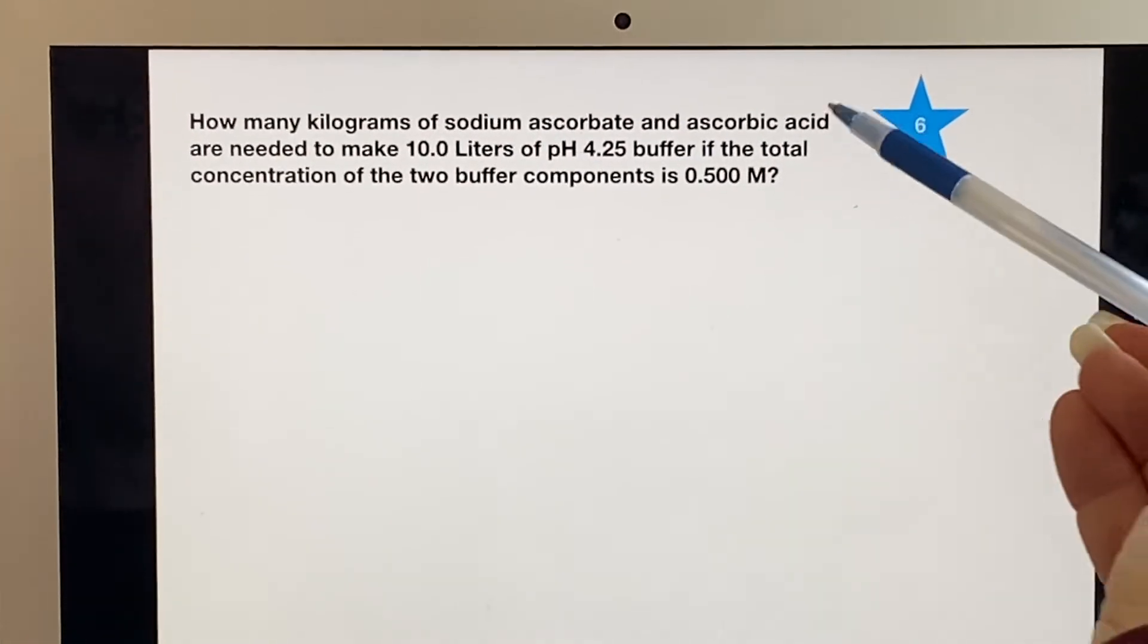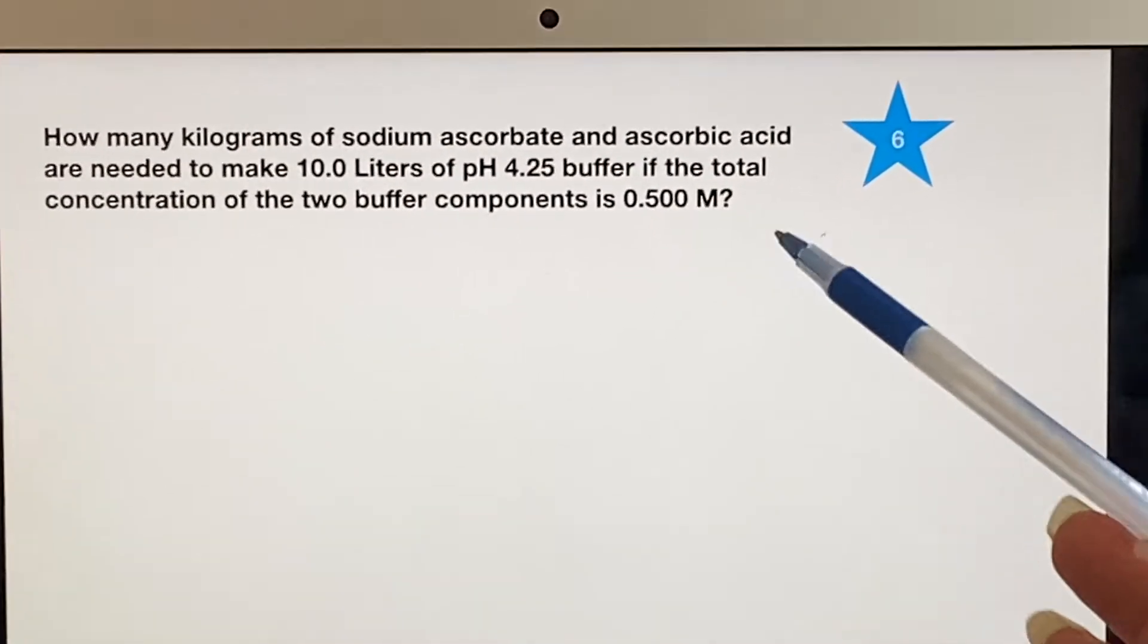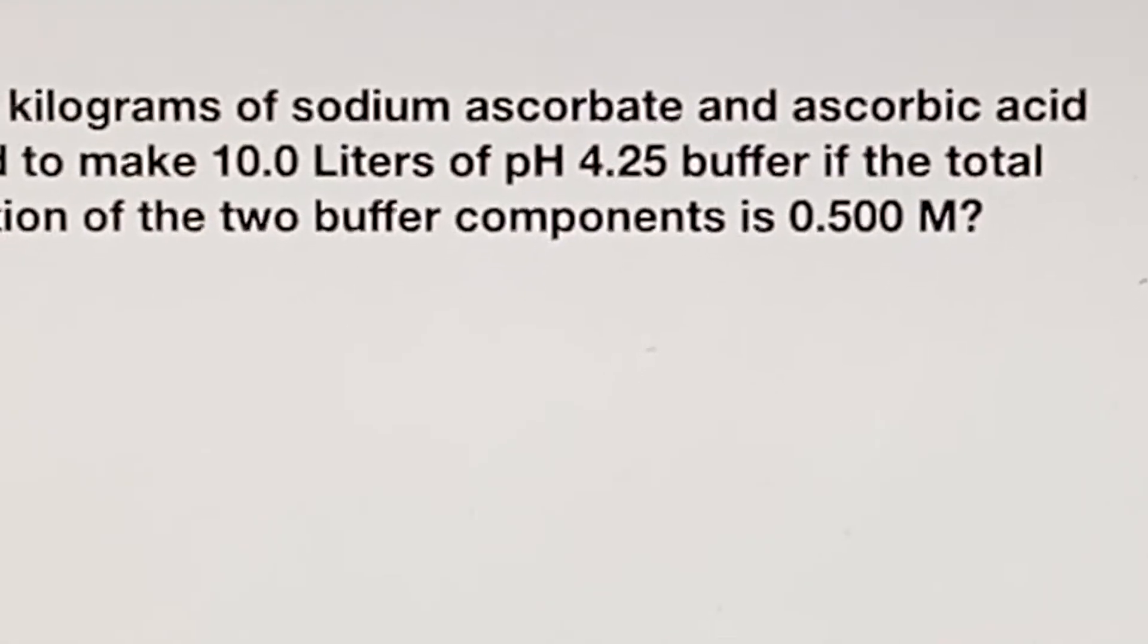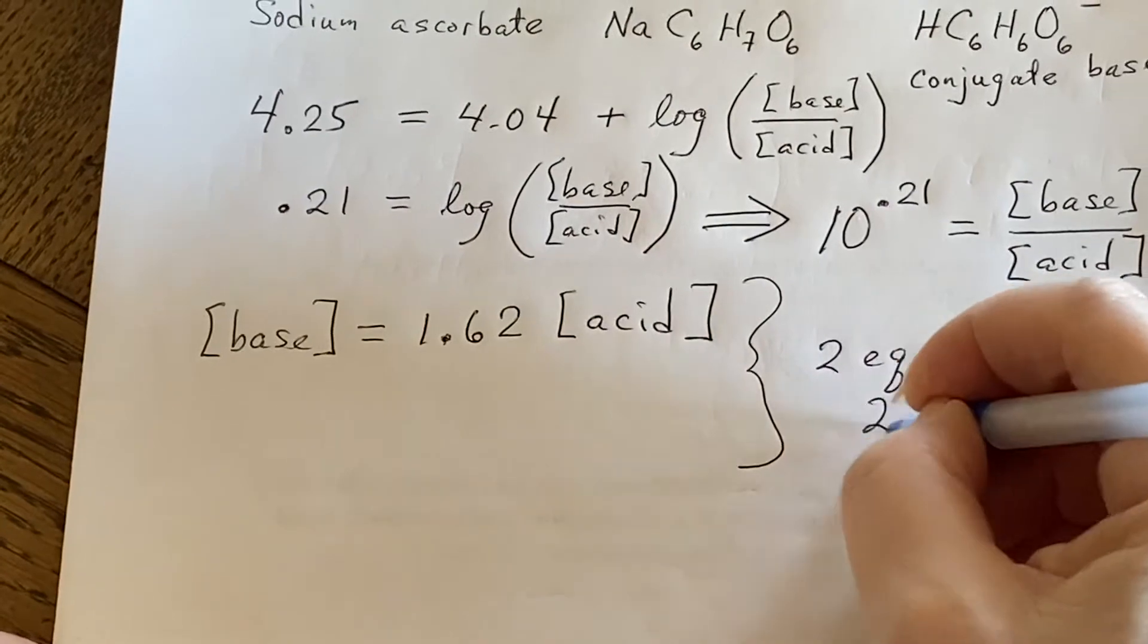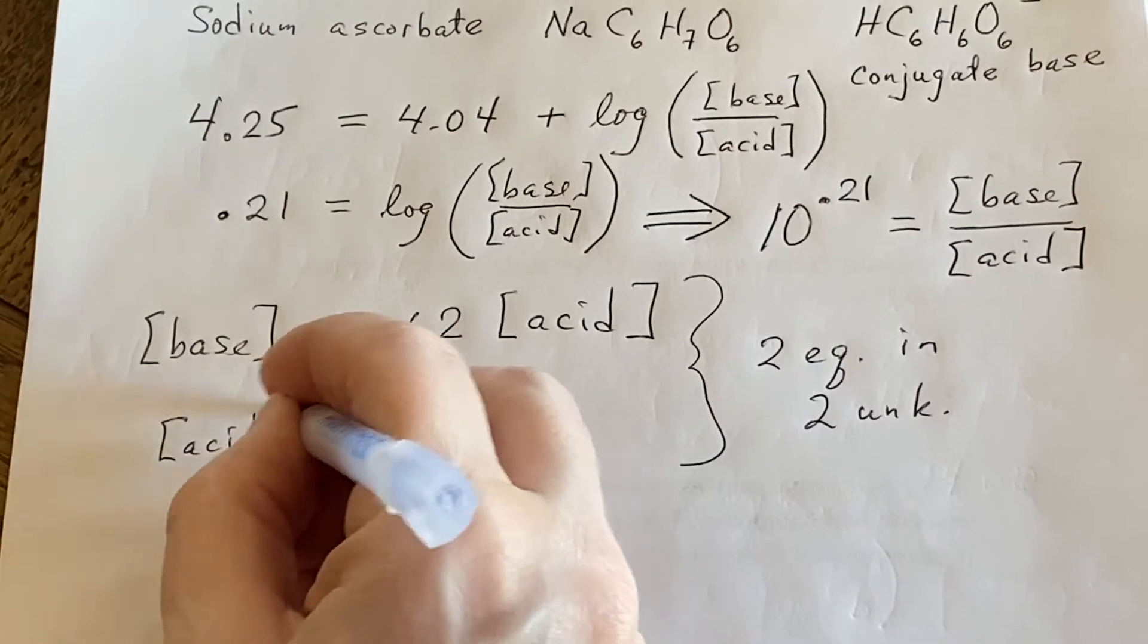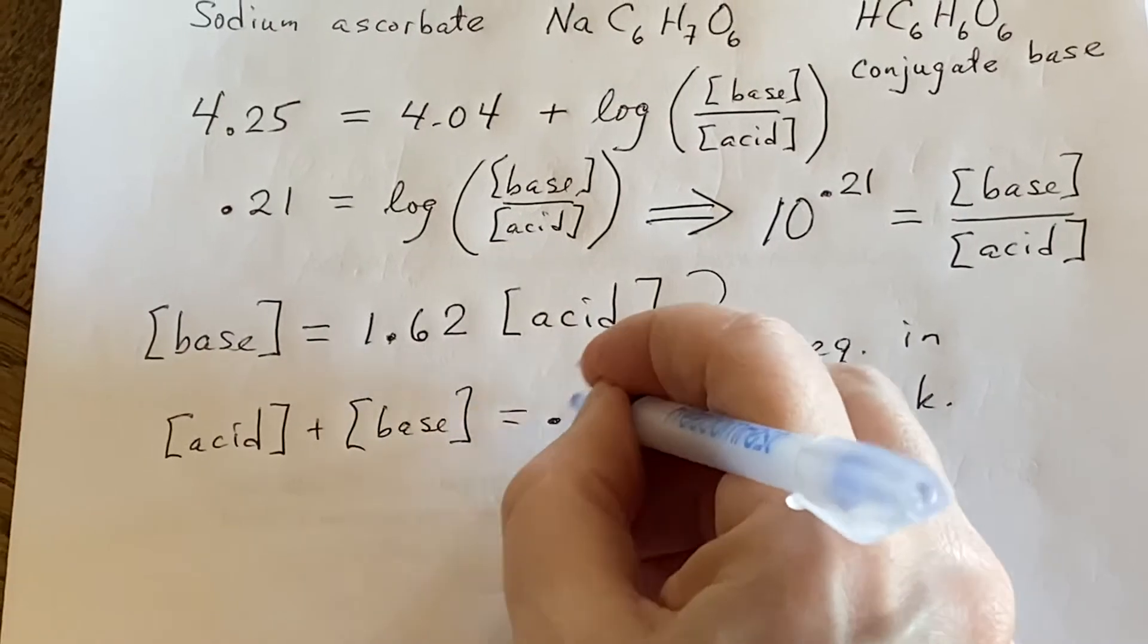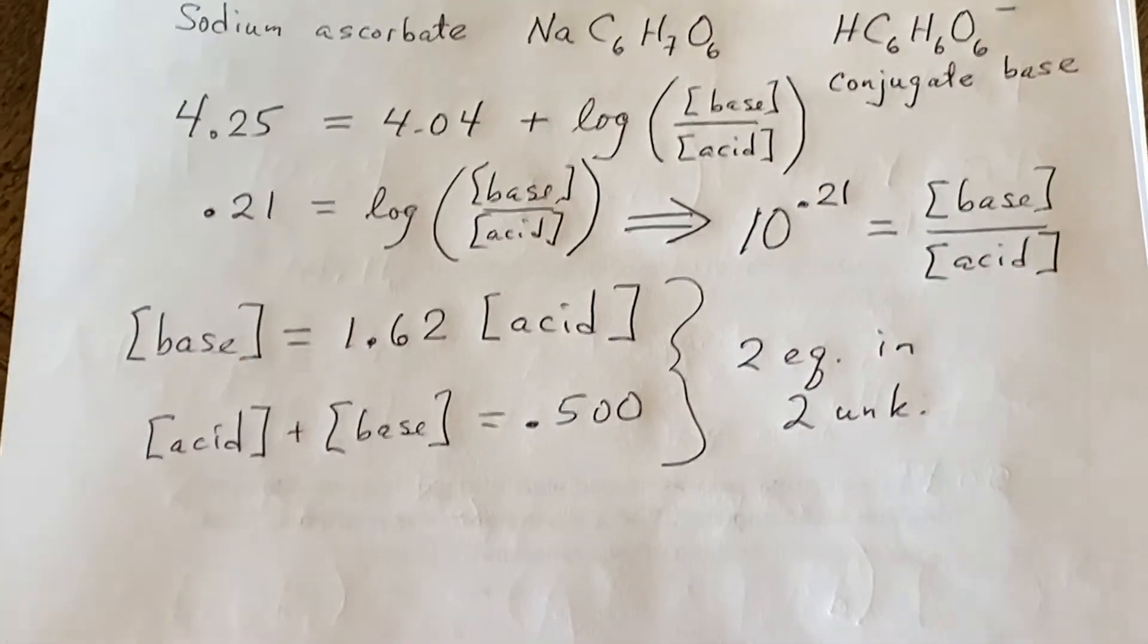What else did they say? Oh, the total concentration of the two components is 0.5 molar. Okay. So they're telling me that I now can say, let's look at two equations in two unknowns. The second equation is that the amount of acid plus the amount of base is 0.500. All right. I have two of those.